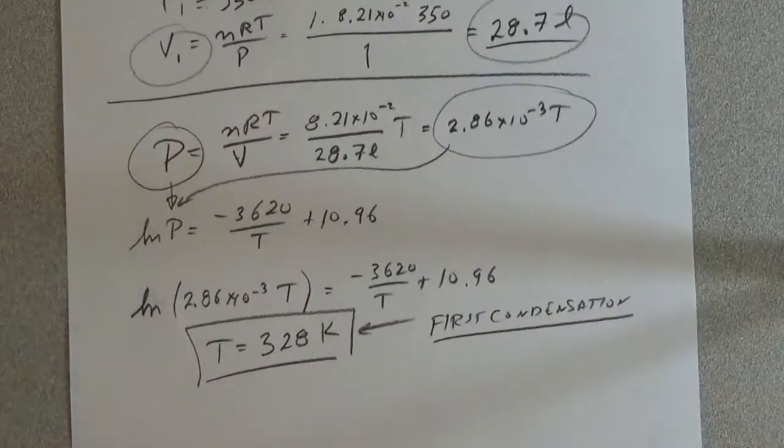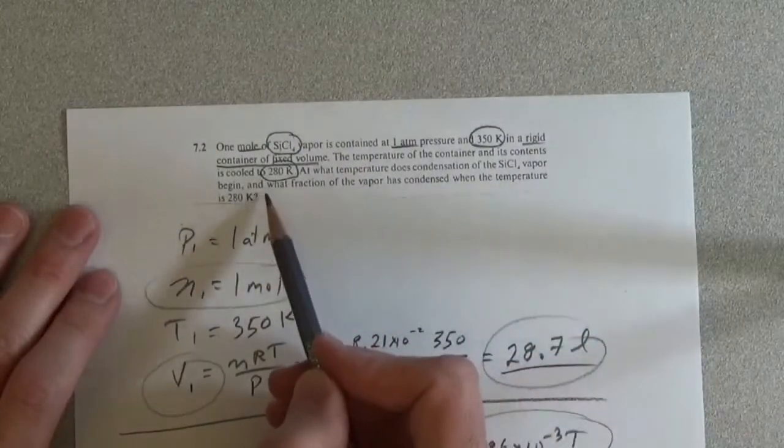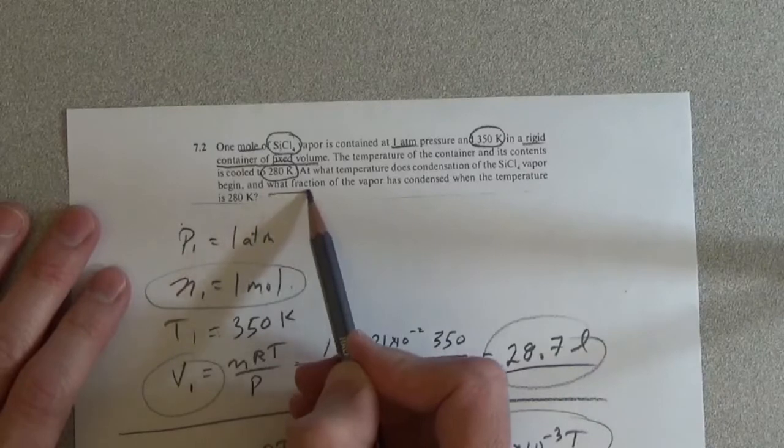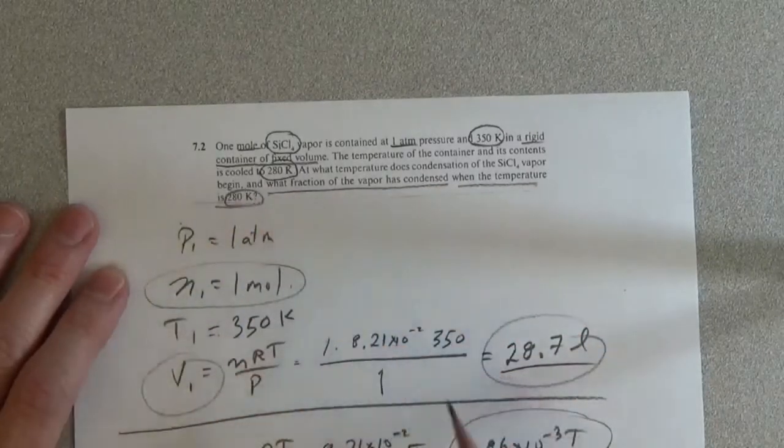And continuing, we're supposed to find what fraction of the vapor has condensed when the temperature is at 280 K.